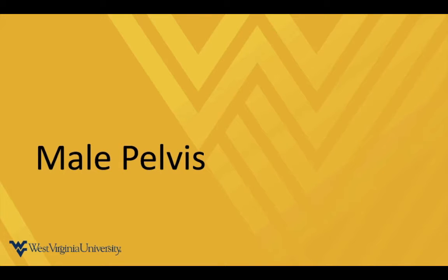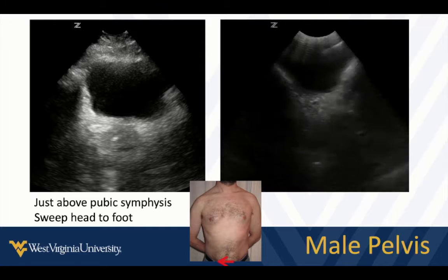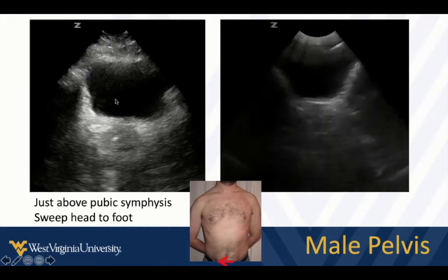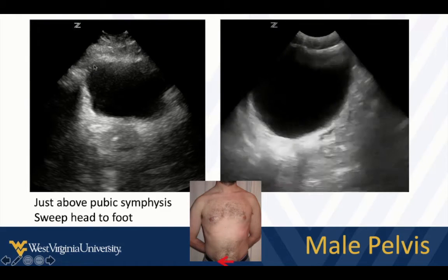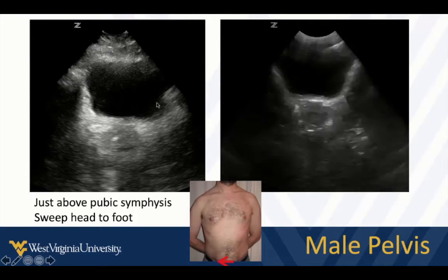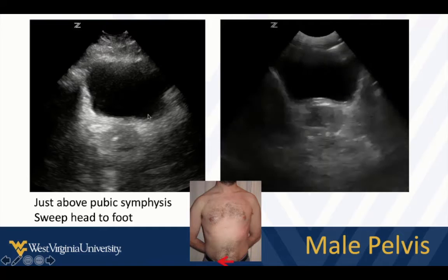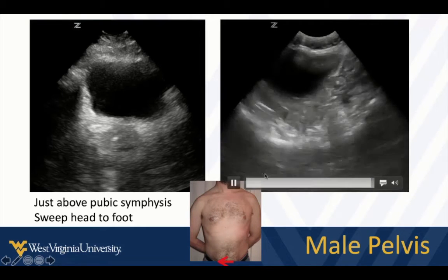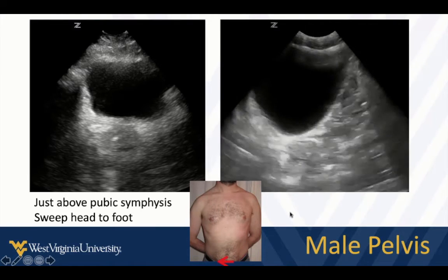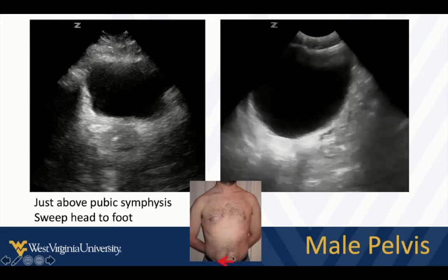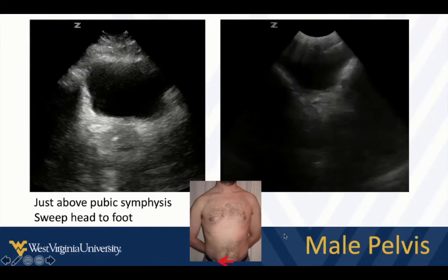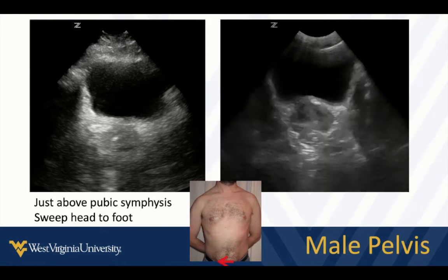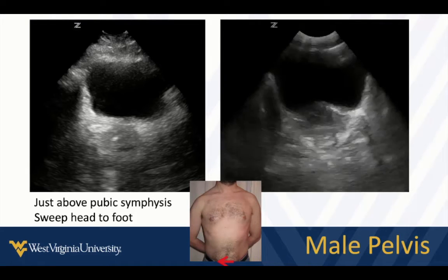The last place we're going to look for free fluid is in the pelvis, which looks a little different from male to female. In the male pelvis, the bladder is going to be small or large depending on how full it is, but it should be somewhat fluid-filled. We see the prostate back here. These are both transverse views, with the probe right above the pubic symphysis, indicator directed to the patient's right. We fan to their feet and to their head to examine the bladder completely.